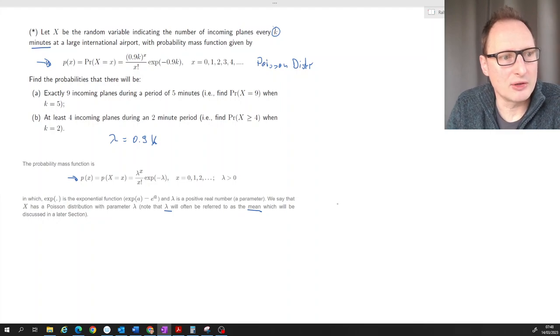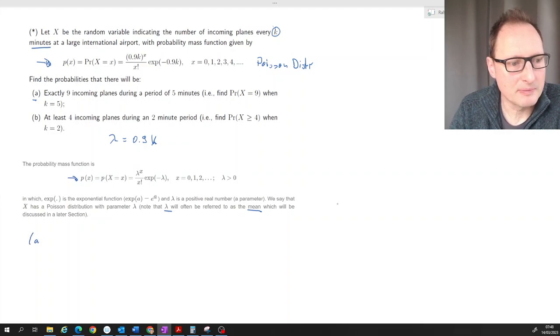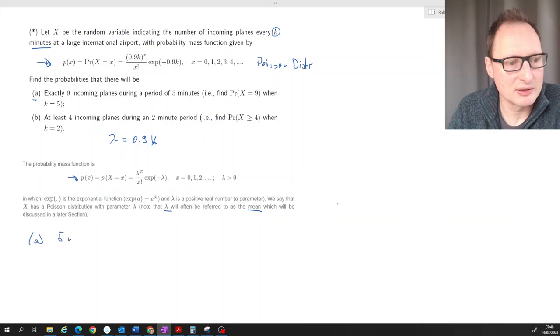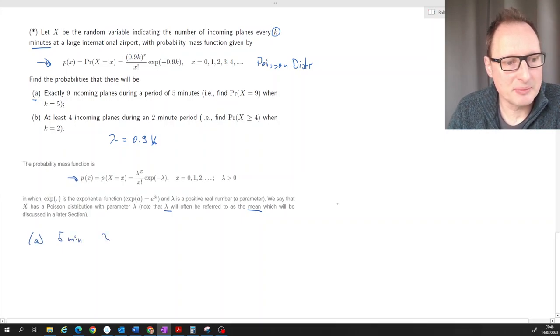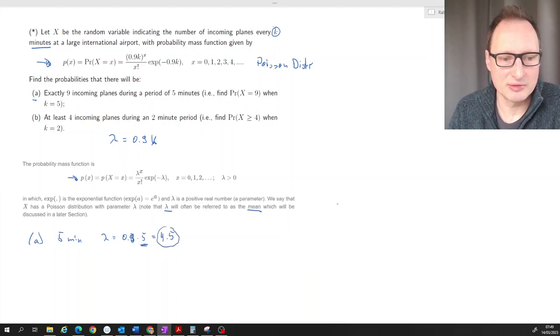So let's see how this works for part a. We're saying the time interval is five minutes. So what is the lambda in this case? Lambda in this case is 0.9 times 5 which is 4.5. So that means that on average we should expect 4.5 planes in a five minutes interval.